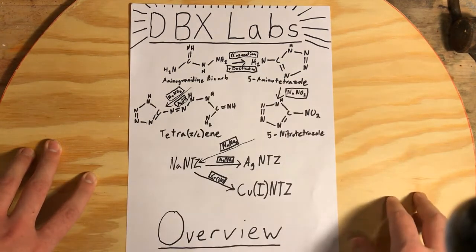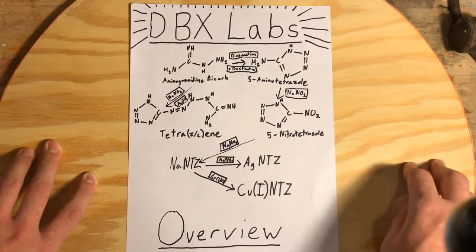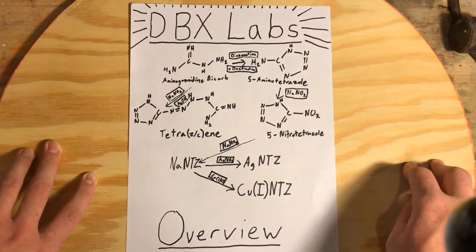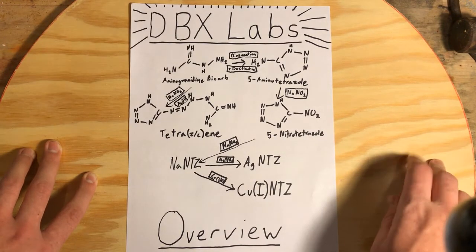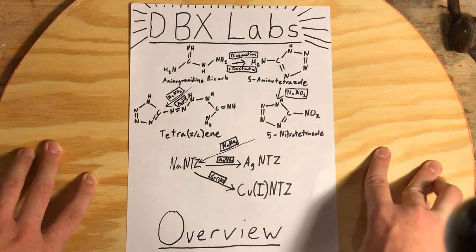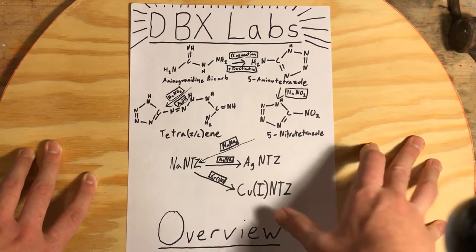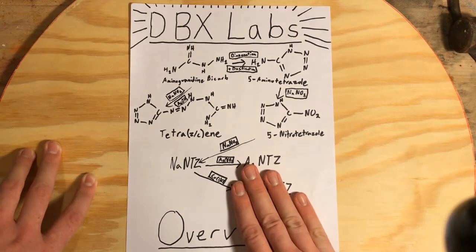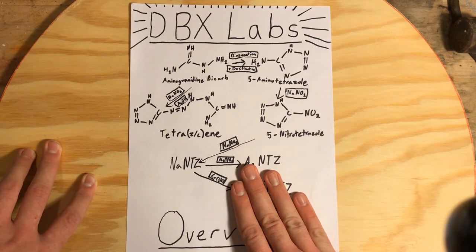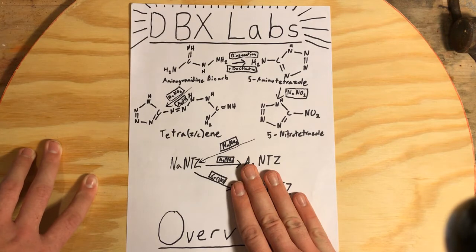The rest of these are all a bit more energetic. The Nitro Tetrazole derivatives — NANTZ, AGENCE, and DBX-1 — they're all going to be a bit more energetic compounds. So they'll be small-scale syntheses.